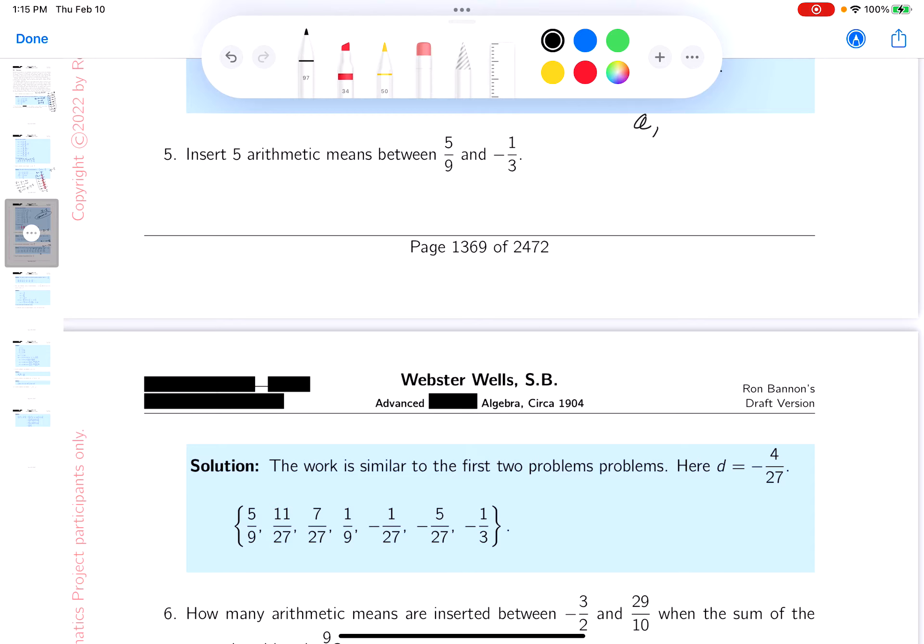So I know what A1 is. A1 is five-ninths. And now what they're going to do is they're going to insert five arithmetic means, which means that last term, that would be A7 then, right? And there'd be five terms in between.